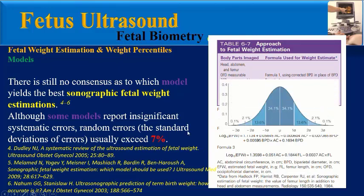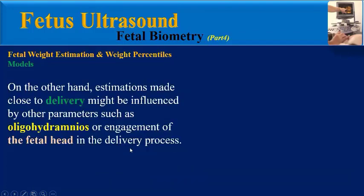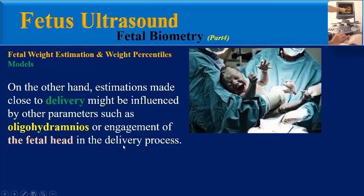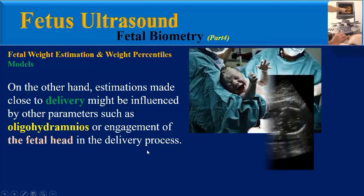Although some models report insignificant systematic errors, random errors usually exceed 7%. Estimations made close to delivery might be influenced by other parameters such as oligohydramnios or engagement of the fetal head in the delivery process.